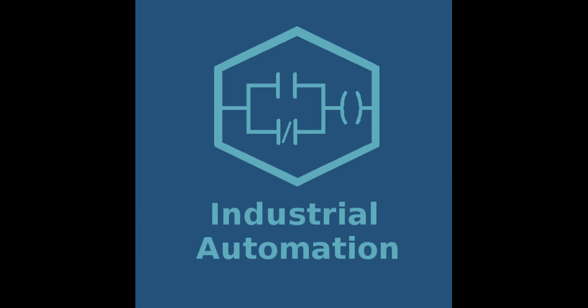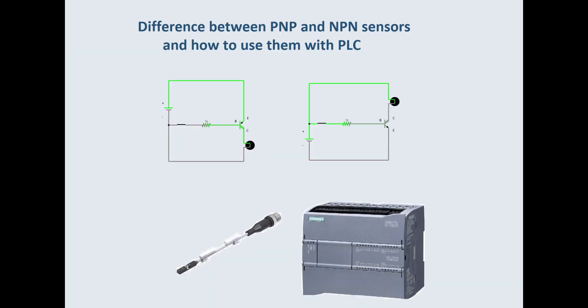Hello and welcome. In this fourth video I would like to explain the difference between PNP and NPN sensors. Basically in automation you can get PNP or NPN sensors — they do the same thing, but it depends on the control system, because some input cards are only used for NPN or PNP. So it's very good to understand the basic difference. Let me draw the wiring diagram so you can see how the current flows.